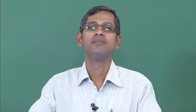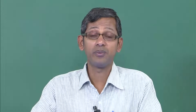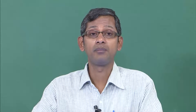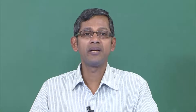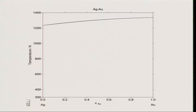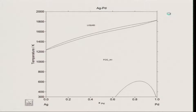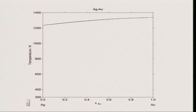The first thing I am going to show is the ternary isomorphous system of gold, silver, and palladium. It is very simple but let us look at it carefully. Silver melts at about 961 degrees Celsius and gold melts at about 1064 degrees Celsius. The binary phase diagram between silver and gold is of the isomorphous type, as shown here — all taken from the MTDATA database.